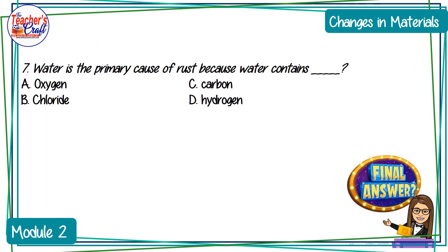Number seven: what is the primary cause of rust, because water contains blank? A — oxygen; B — chloride; C — carbon; D — hydrogen.